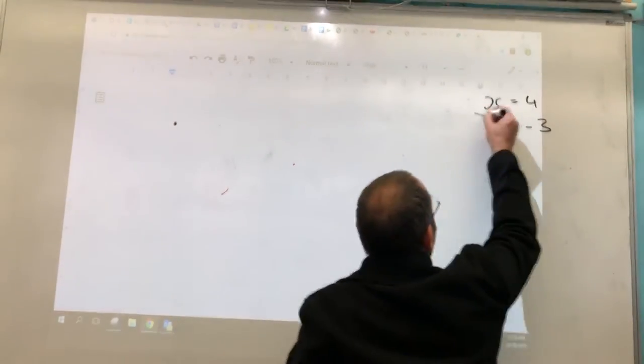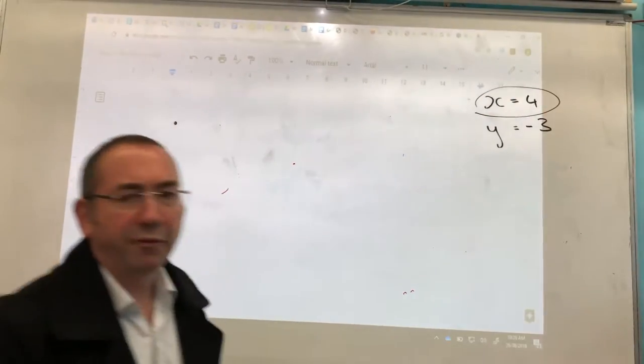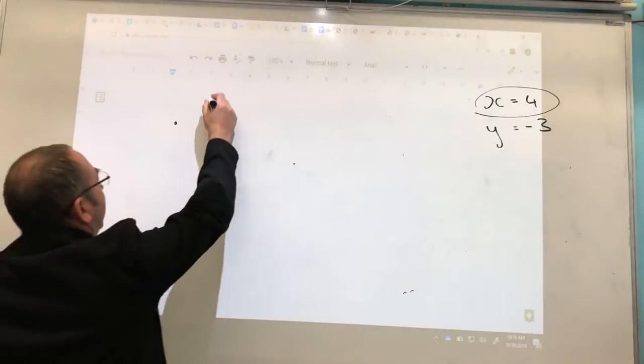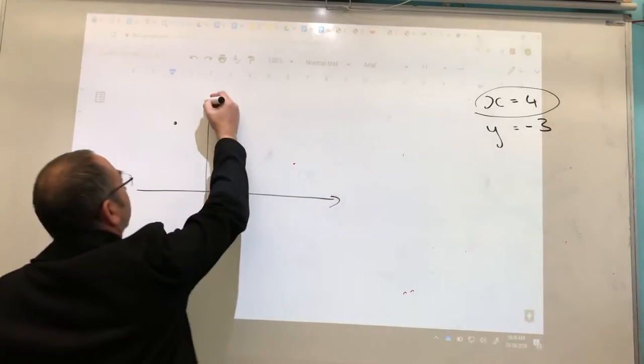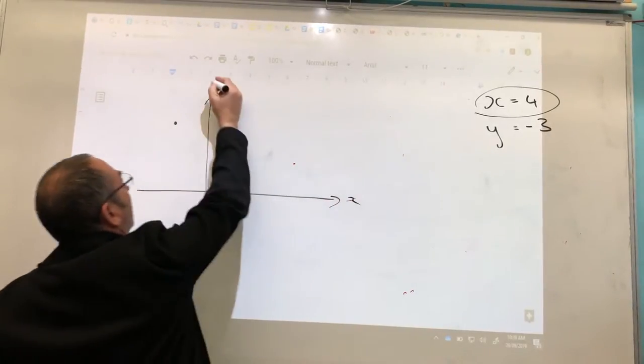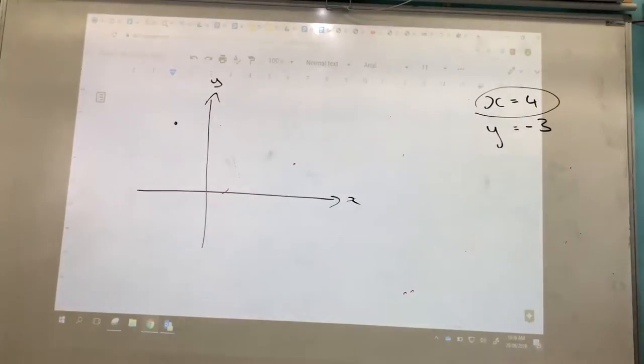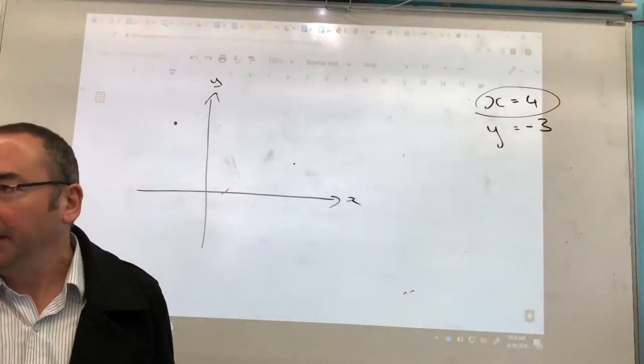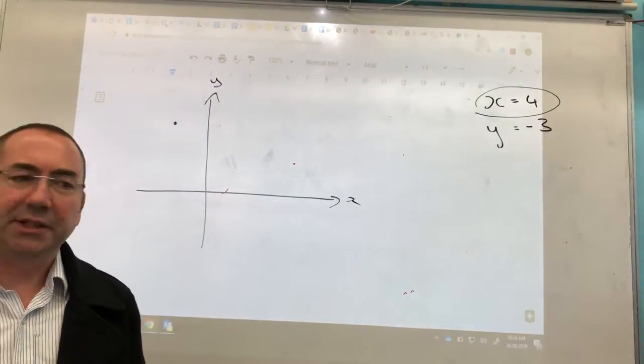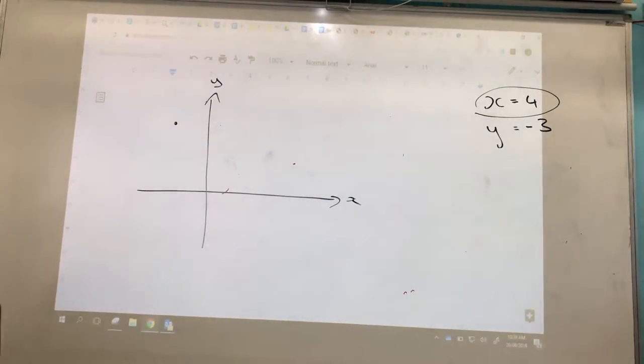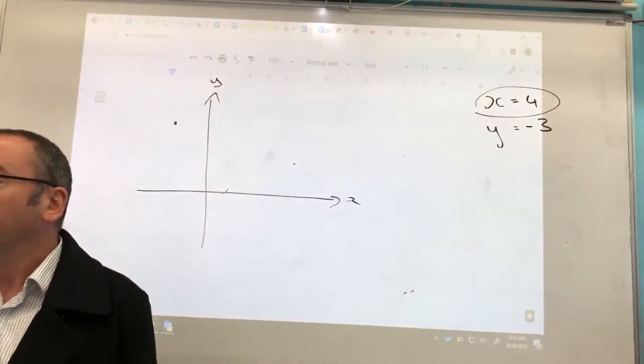So let's start with this line, x equals 4, and if we had to do a graph of it, if we had to sketch it on the number plane. What exactly is it telling us? We're used to y equals x plus something, or y equals 10x plus something. We're used to equations in that form. How do we deal with this strange one that just says x equals 4?